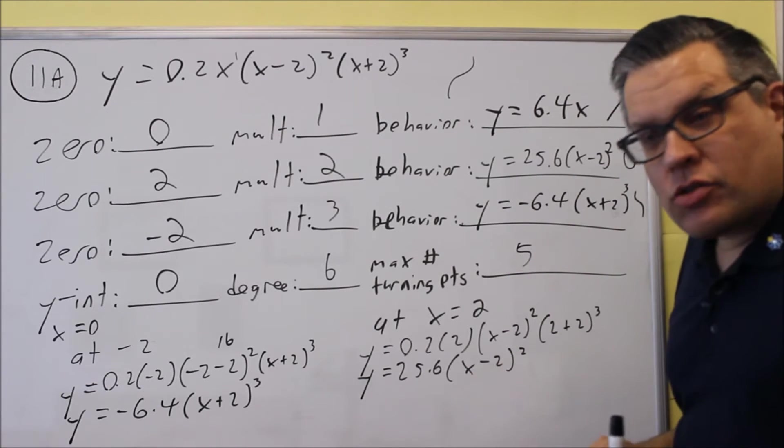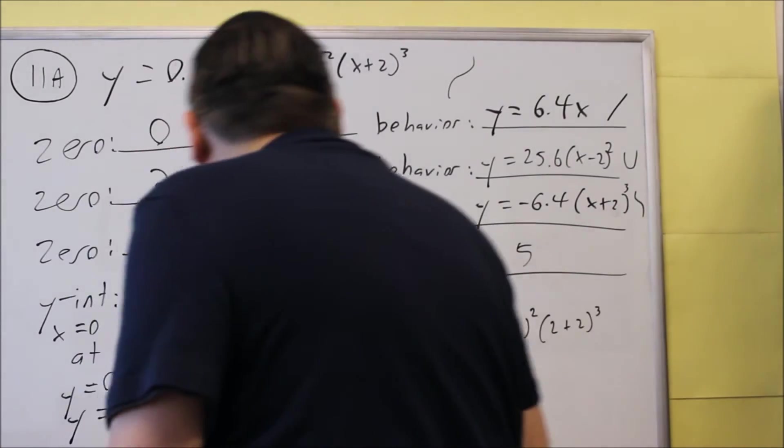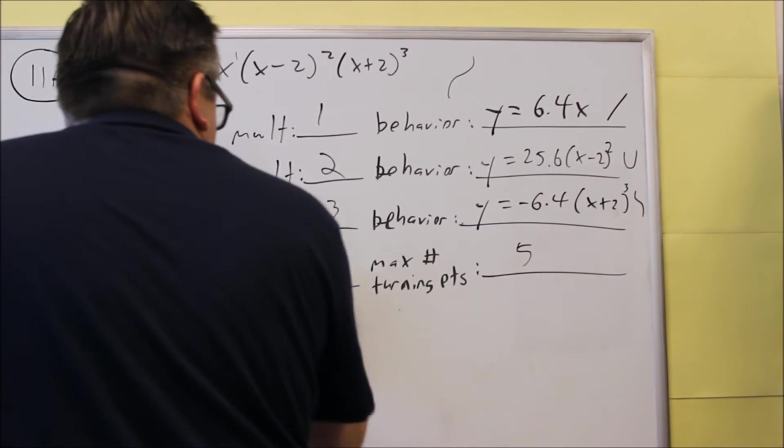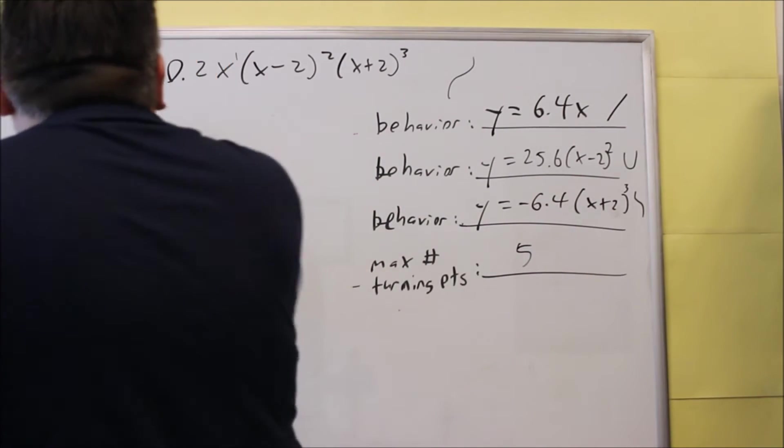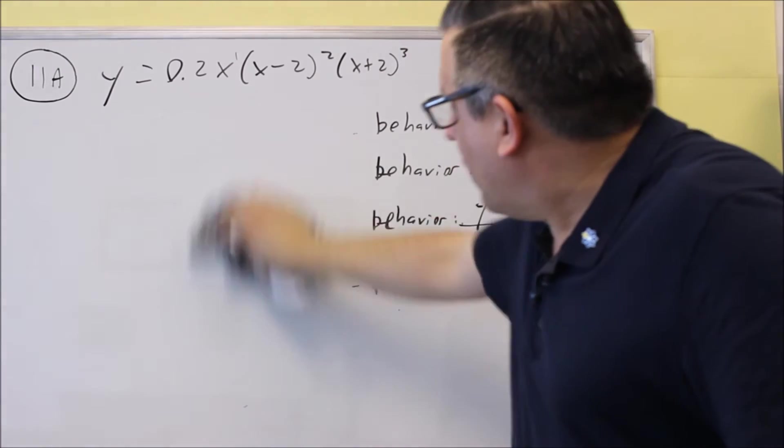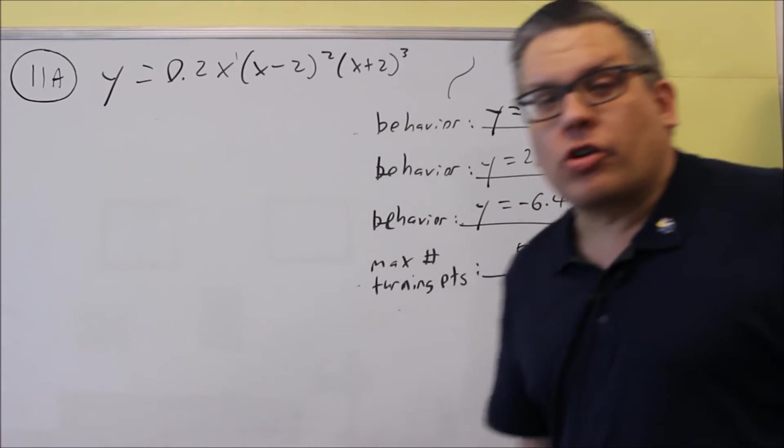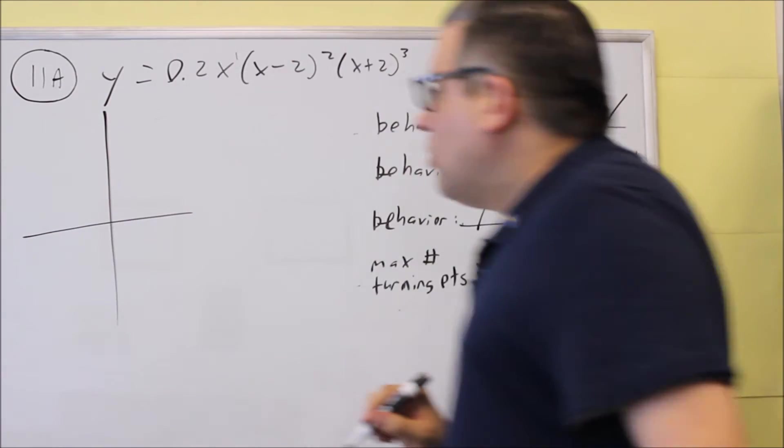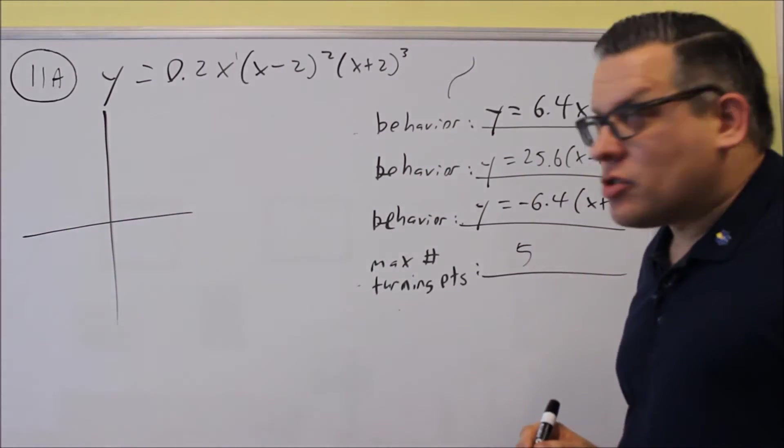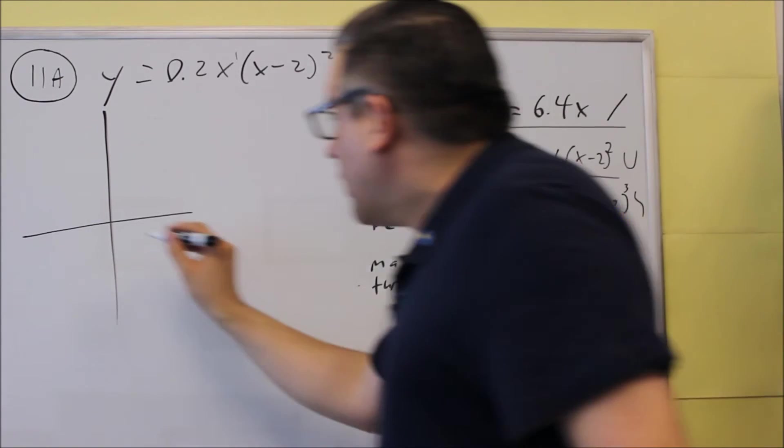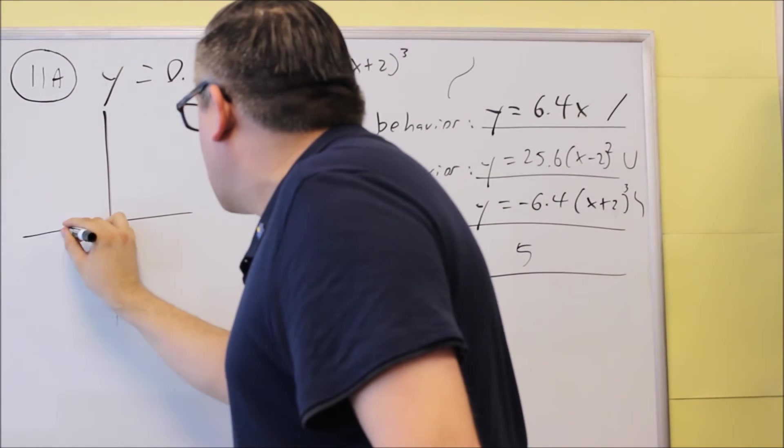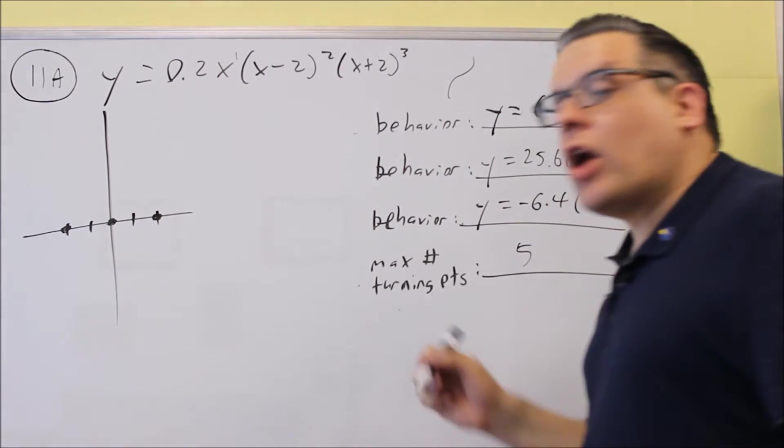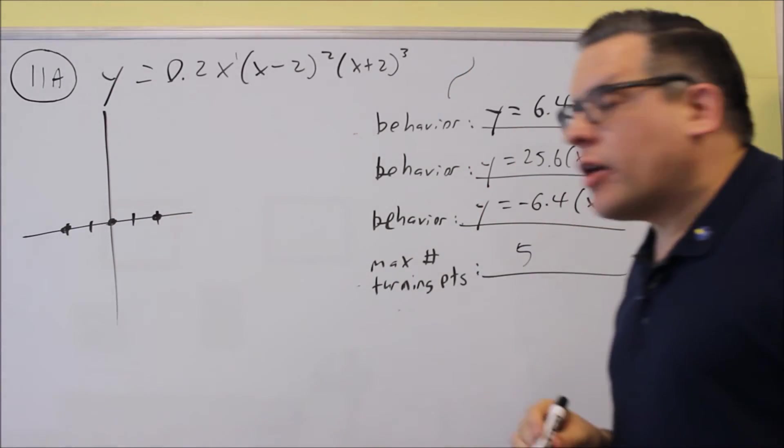So now I have all this complete, I'm ready now to do the graph. So let me erase some of this here so we have some space for the graph. I'm leaving the behaviors up there because that's what's going to help me in order to draw the sketch of the graph. So let's first begin by plotting down the intercepts. So I have my intercepts that are 0, 2, and negative 2. My y-intercept is (0,0). So I already have that one.